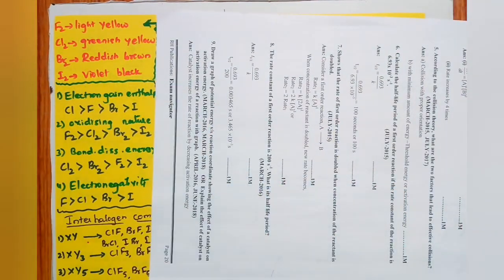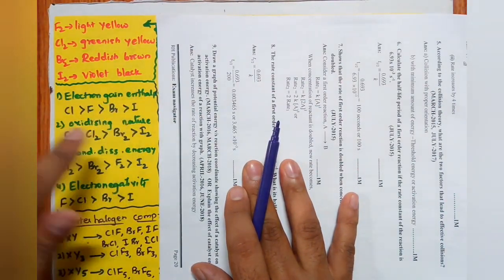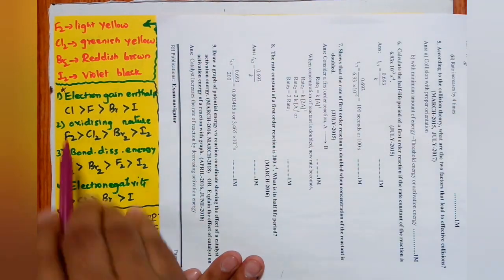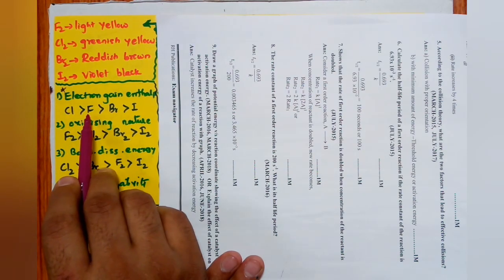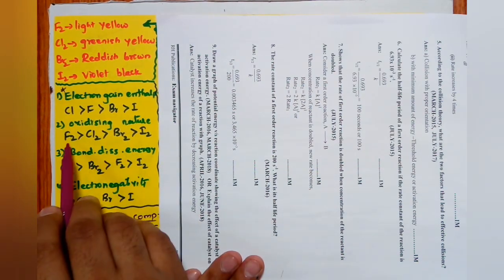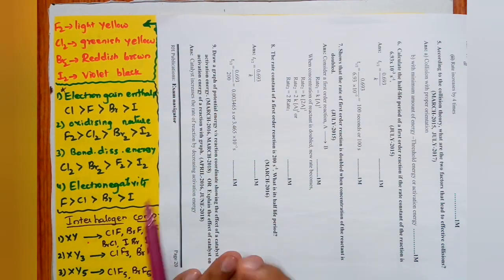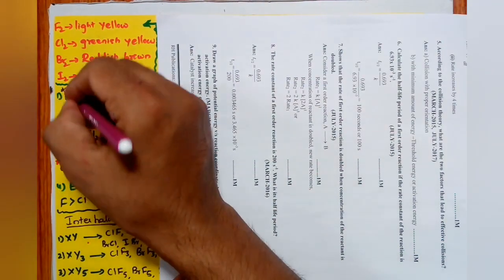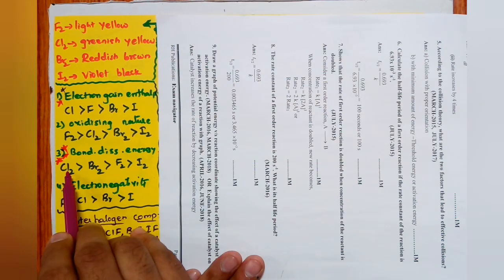Group 17 halogens: F2 is light yellow, Cl2 is greenish yellow, Br2 is reddish brown, I2 is violet-black in solid state. Electron affinity order — exceptional: Cl > F > Br > I. We expect F to be highest, but Cl > F due to the smaller size of F causing inter-electronic repulsion.